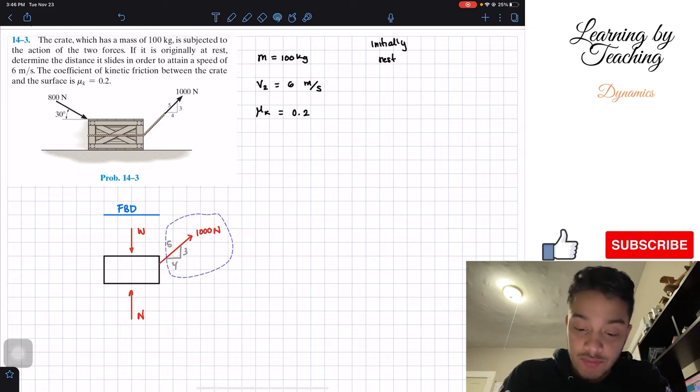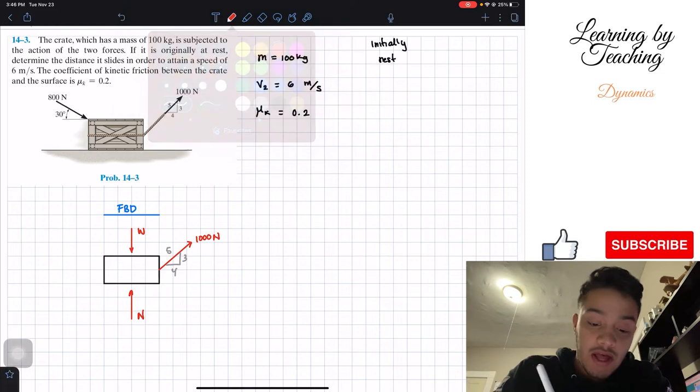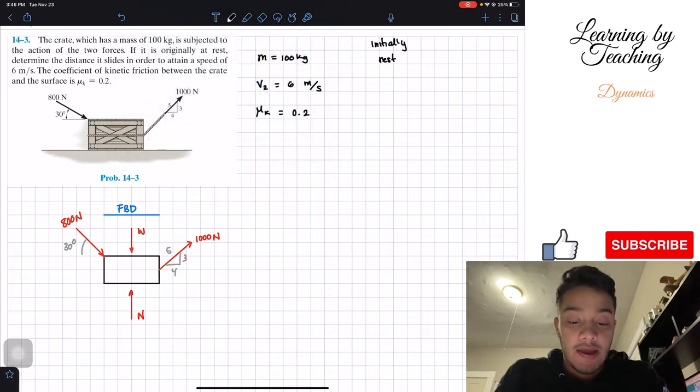Let me move this force over here. Then we have the other force, which is the 800 newton force, 800 newtons. And this one has a direction of 30 degrees with respect to the x-axis.